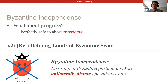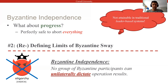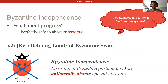Byzantine independence states that no group consisting of only Byzantine participants should be able to single-handedly decide the outcome of our operations. This is an important property, and actually one that traditional systems relying on a leader do not attain, because the leader has undue control over transaction ordering and is able to inject and front-run transactions to influence results.